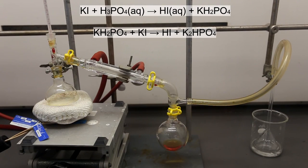The reactions that are likely happening are shown above. In the first reaction, less heat is required, and the potassium iodide reacts with the phosphoric acid to produce aqueous hydriodic acid and monopotassium phosphate.